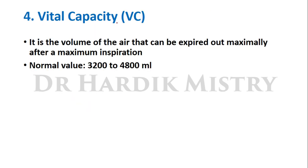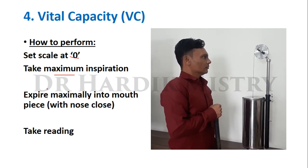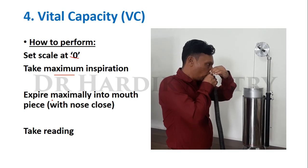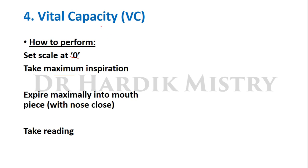Vital capacity, or VC, is the volume of air that can be expired out maximally after maximum inspiration. Normal value is 3200 to 4800 ml. To measure it with the Hutchison's spirometer: set the scale at zero, tell the subject to take maximum inspiration, then expire maximally into the mouthpiece with nose closed, and take the reading. This gives the vital capacity.